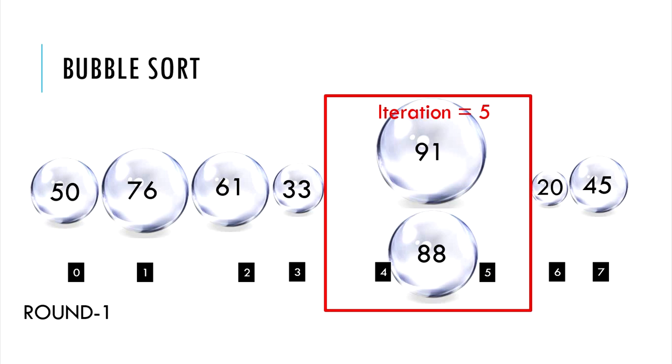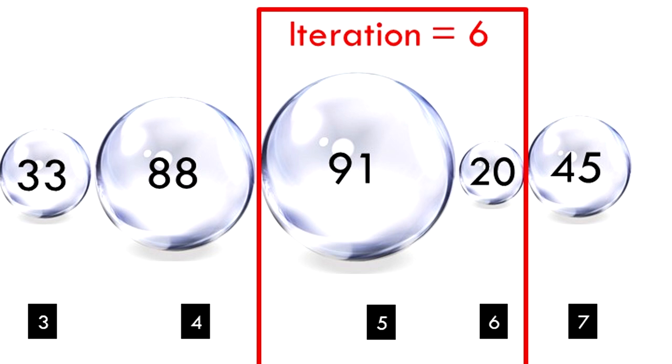Iteration 6. Obviously, element at 5 needs to move to 6. So let's swap. Iteration 7. Again, swapping is required.